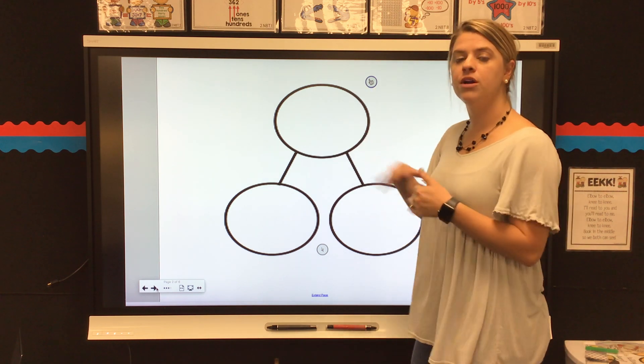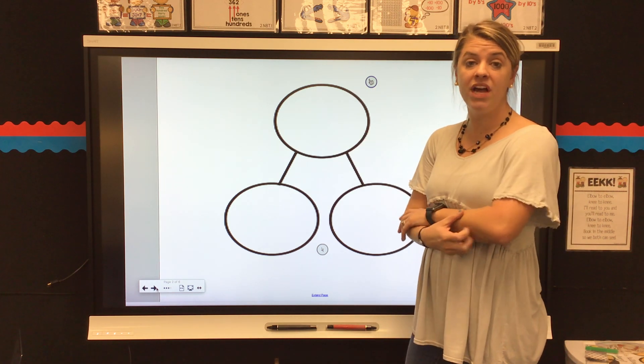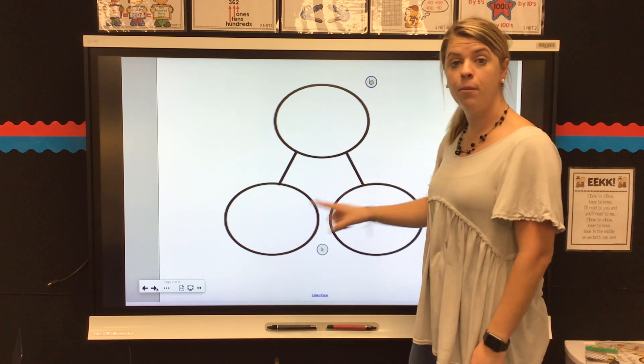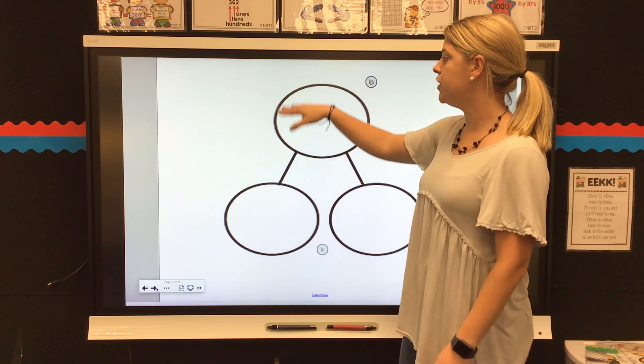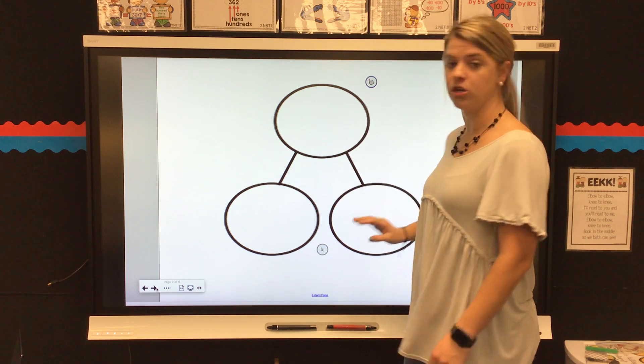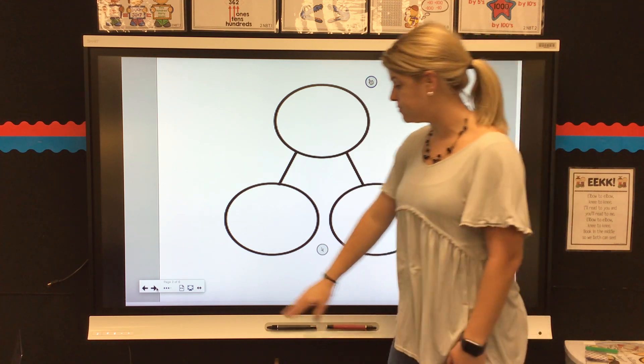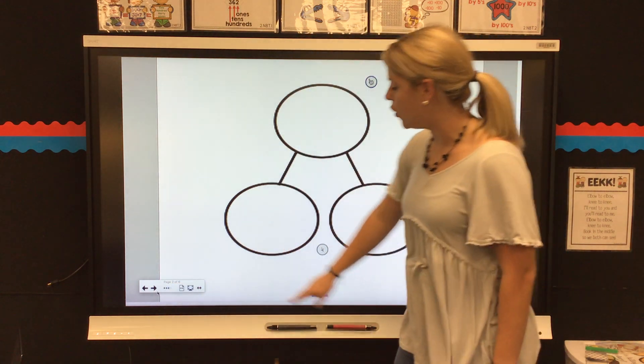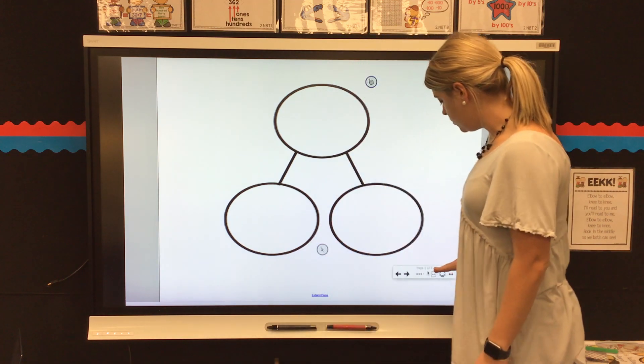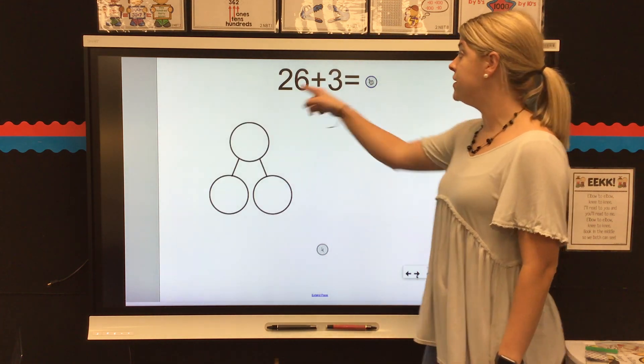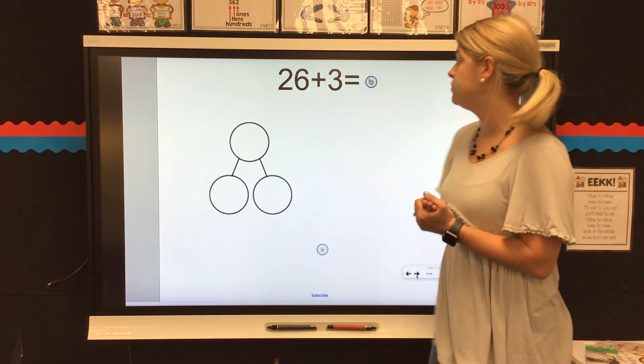We use our number bond to help us break one number down into two parts. So we have one whole number here and we break it down into parts down at the bottom bubbles.